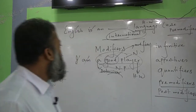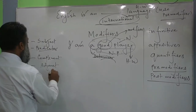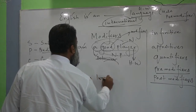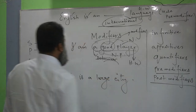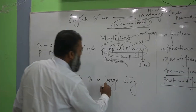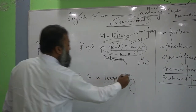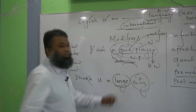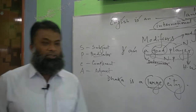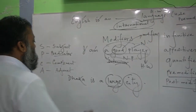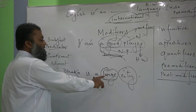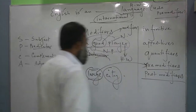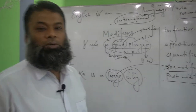Consider another sentence: 'Dhaka is a large city.' Which word is the pre-modifier here? 'Large.' Why? Because 'city' is the head word — it is the main noun — and the word 'large' explains about the city. What kind of city is it? It is a large city. This word takes its position before the noun, so it is called a pre-modifier, and we can see that 'large' is a successful pre-modifier.